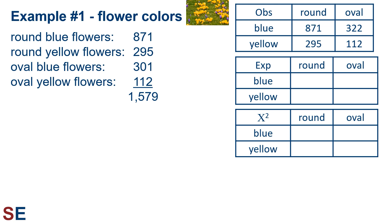We start by doing two things. First, we'll create a set of grids corresponding to the phenotypes to help stay organized. The first grid will be for the observed numbers of individuals, the second grid for the predicted numbers, and the third will have the chi-squared contribution for each category. The total of the last grid values will be our overall chi-squared value. We also need the total number of offspring — adding up all observed values gives us 1,579.